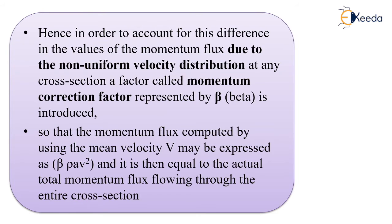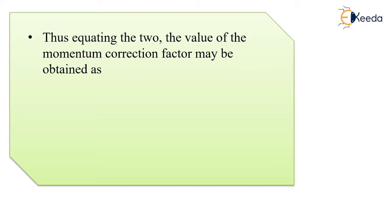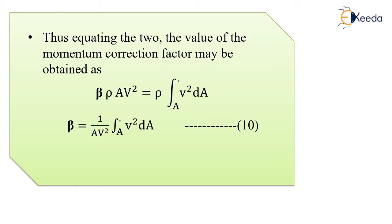And it is then equal to the actual total momentum flux flowing through the entire cross-section. Thus, equating the two, the value of the momentum correction factor may be expressed as: β·ρ·A·V² = ρ·∫V²·dA. From this equation, we get the momentum correction factor beta equal to (1/AV²)·∫V²·dA. This is equation number 10.